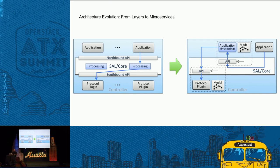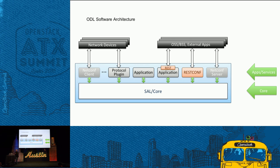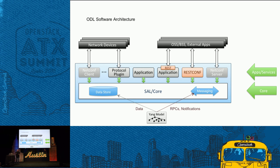In the end, it doesn't really matter if you're a protocol or an application — you're really a producer or a consumer. You talk through a representation of Yang, and there's a data store with two sides: a configuration data store, which is what an application wants the network to look like, and an operational data store, which is what the network actually looks like, pulled from the network devices. There's also a messaging bus that provides RPC and notification functionality.